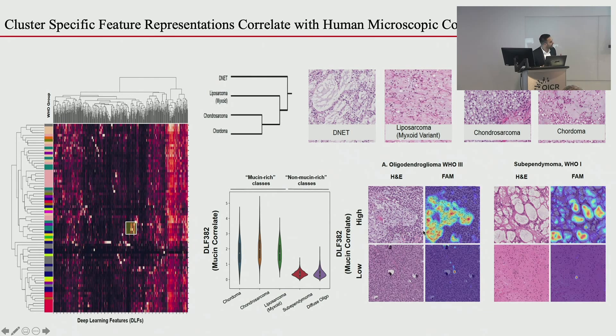For anaplastic oligodendroglioma at high feature 382, there's a myxoid area that the feature activation map exactly pinpoints. The low-382 tile shows no myxoid. For subependymoma, the tumor forms vacuoles of mucin, and the feature activation maps almost perfectly overlay with those mucin-rich areas — confirming that feature 382 corresponds to mucin or myxoid tissue under the microscope.